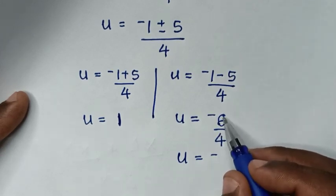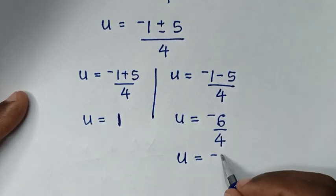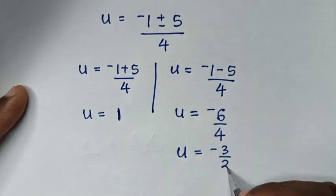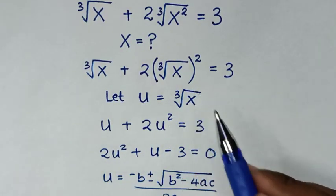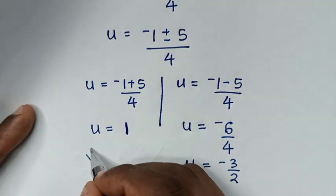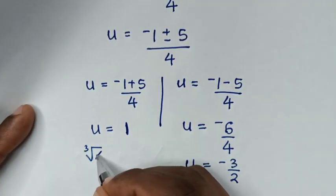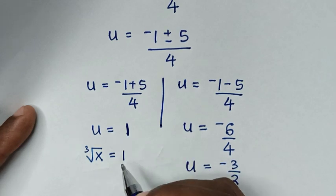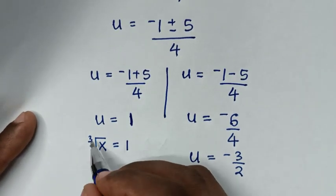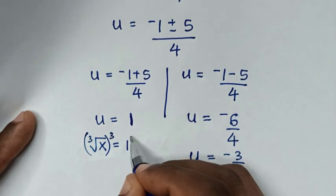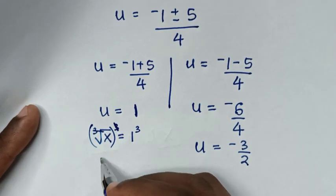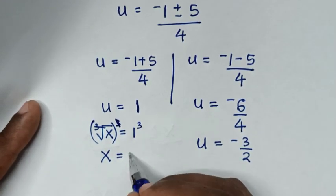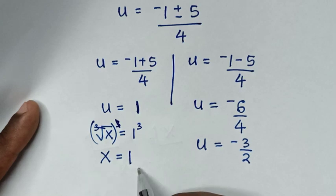Simplifying negative 6 over 4 gives negative 3 over 2. Now we already have the values of u. Recalling that u equals cube root of x, for u equals 1 we cube both sides: cube root of x cubed gives x equals 1 to the power of 3, which is 1. So the first value of x is 1.